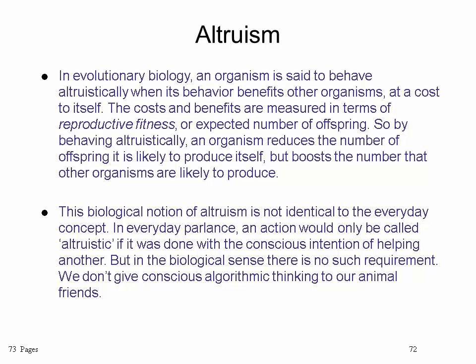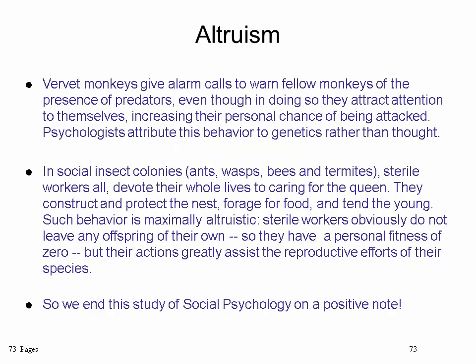In evolutionary biology, altruism is used to define the behavior of animals that risk their lives for the family or group unit, decreasing their own productivity. An organism is said to behave altruistically when its behavior benefits other organisms at a cost to itself — that cost and benefit measured in terms of reproductive fitness, or expected number of offspring. By behaving altruistically, an organism reduces its own likely offspring but boosts the number that other organisms like it will produce — in other words, it gives up its life in order for the rest of the colony to survive.